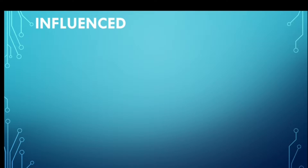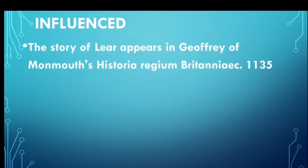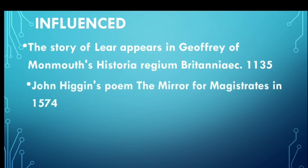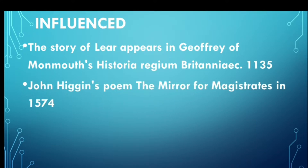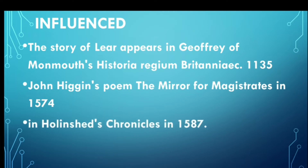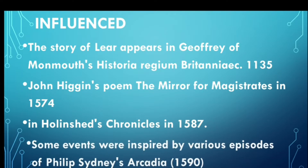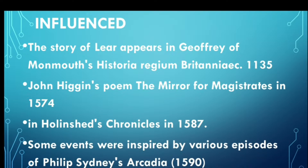Now, from where has it been influenced? The story of Lear appears in Geoffrey of Monmouth's History of Regum Britannia, written in 1135. After that, John Higgins' poem The Mirror for Magistrates, which was written in 1574. After that, Holinshed's Chronicles, written in 1587. Some events have also been inspired from Philip Sidney's Arcadia.